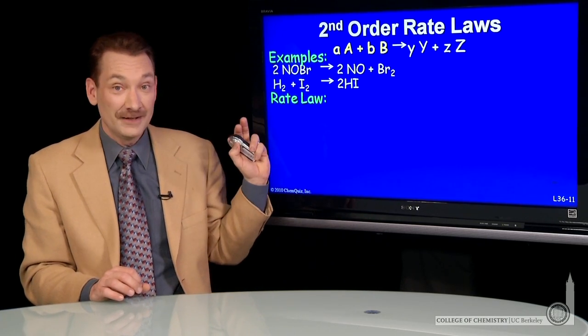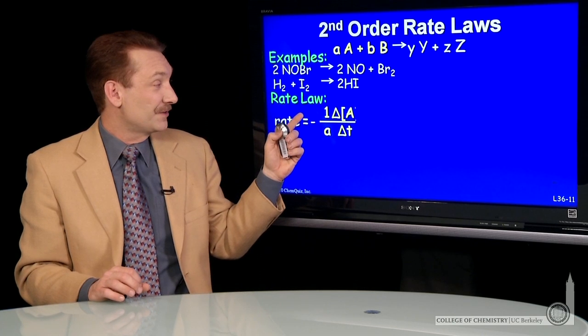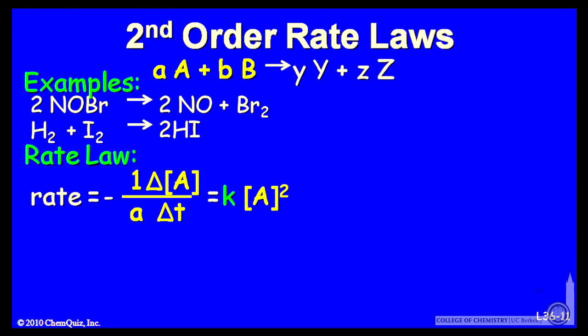If you write down the rate laws, the rate laws for second order reactions look like this. The change in concentration over the change in time, the rate, is equal to k, the rate constant, times a concentration squared, second order.